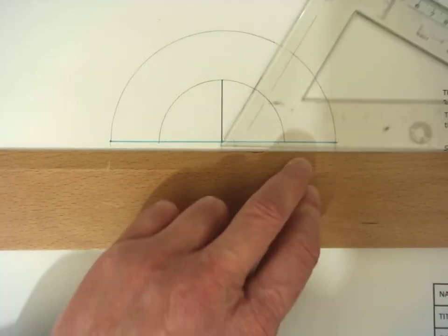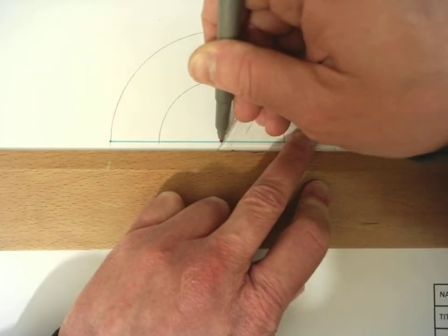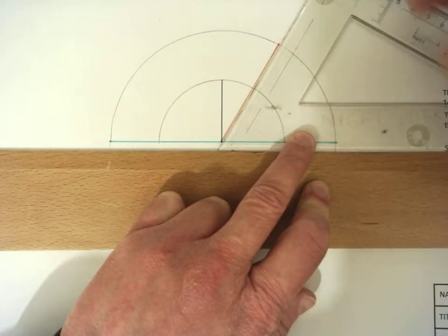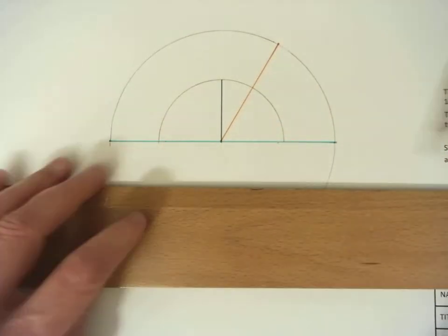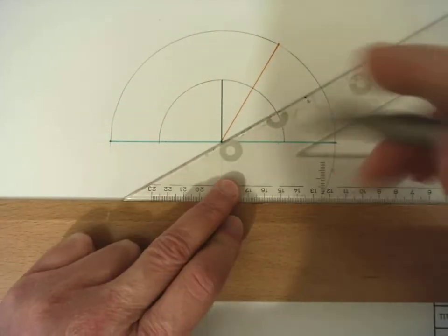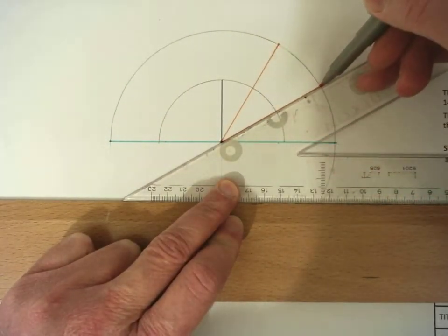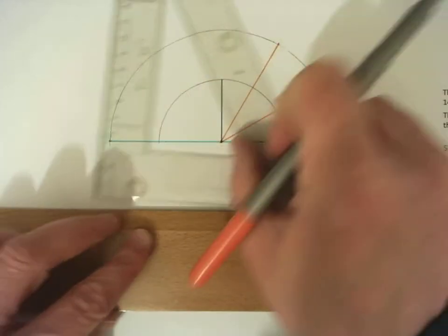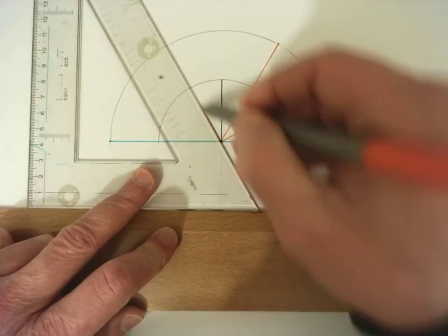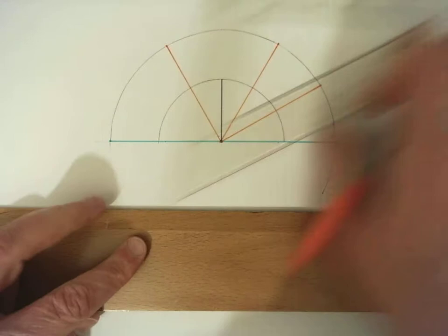Next we need to divide this up into 60 degree segments and 30 degree segments. So that's 60 degrees, this is 30 degrees. And we have to repeat for this side of our ellipse.